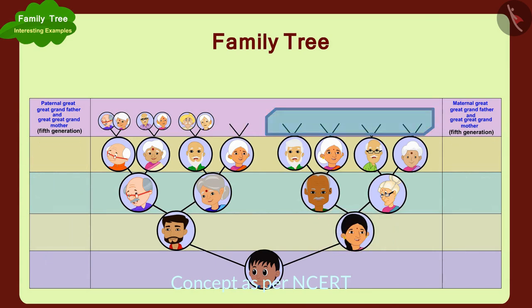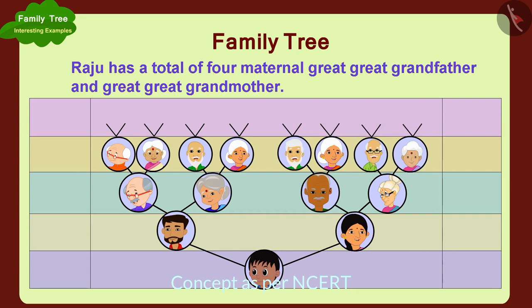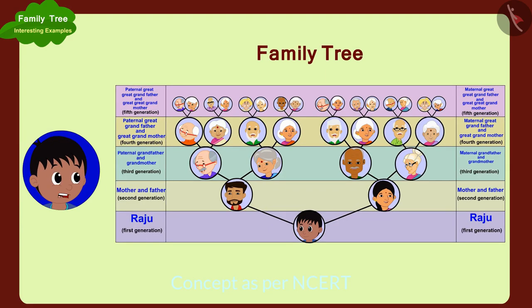In this way, these are Raju's maternal great great grandfather and great great grandmother. Raju has a total of four maternal great great grandfathers and great great grandmothers. Now, if I make my sixth generation, how many people will be there in it?